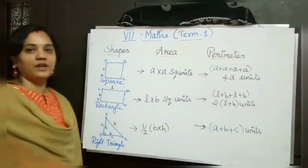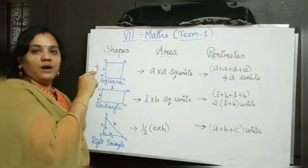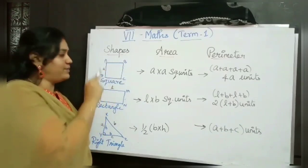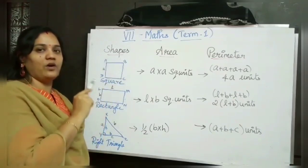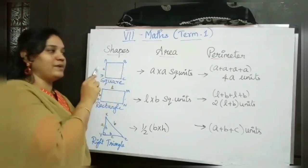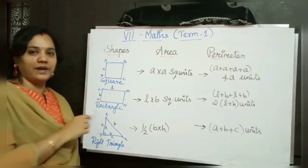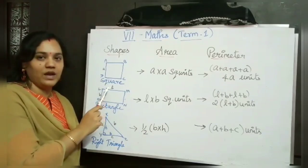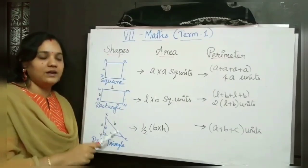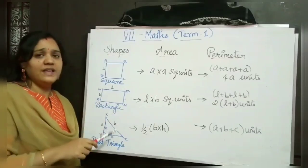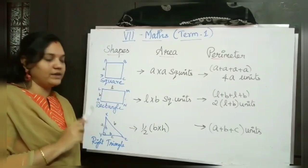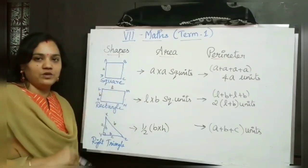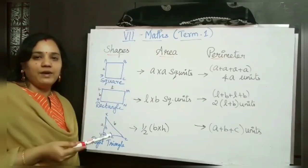For finding out the perimeter of the square, we start from A and end up at A — the distance around the shape. Since all sides are equal in a square, we add A plus A plus A plus A, that is 4A units. For a rectangle, opposite sides are equal — one side is L and one side is B. The formula for area of the rectangle is L into B square units. For perimeter, we add all sides: L plus B plus L plus B, that is 2 into (L plus B).